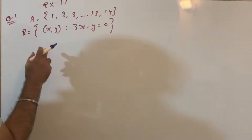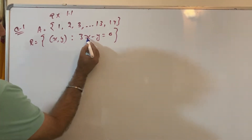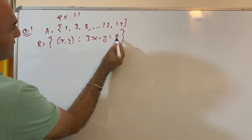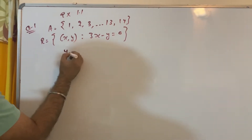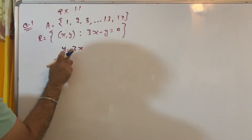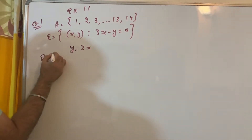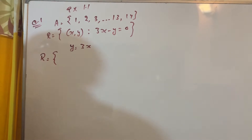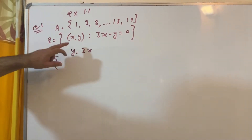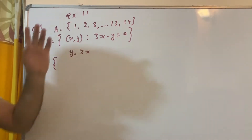So what is the relation here? The first element and the second element — the relation is 3x minus y is equal to 0. You can write it as y is equal to 3x, that is the second element is 3 times the first element. So write the relation now.